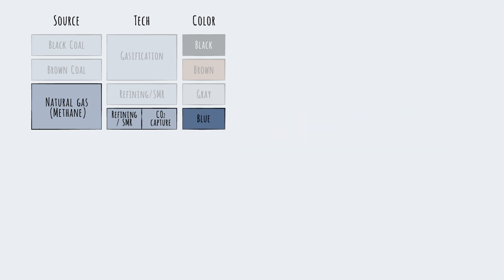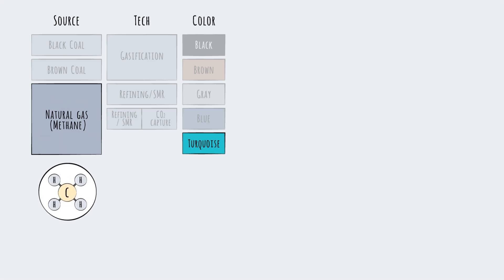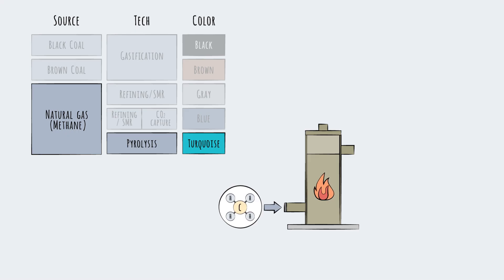Next down the rainbow is what's often called turquoise hydrogen. This is also made from methane gas but via a different technology—pyrolysis. During pyrolysis, carbon byproducts emerge not as a gas but as a solid called carbon black, and indeed pyrolysis is a promising pathway for lower emission hydrogen.